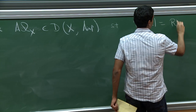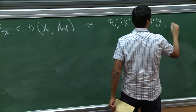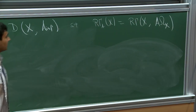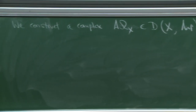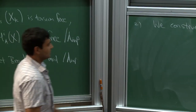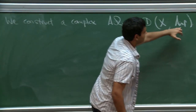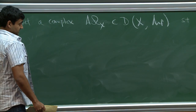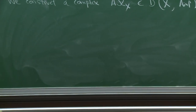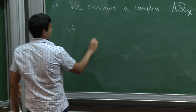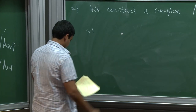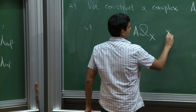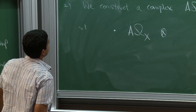In particular, what Fargues' theorem implies in our setup is that if you are in the torsion-free case, then the crystalline cohomology of the special fiber is a functor of the generic fiber, which is not easy to see from the definition. The second remark is about how the proof goes: you construct the cohomology theory by first constructing an appropriate sheaf and taking its cohomology. More precisely, we construct a complex A_omega_X, which is a complex of sheaves on X of A_inf modules together with Frobenius, such that R_gamma_A(X) is just the hypercohomology of this complex.